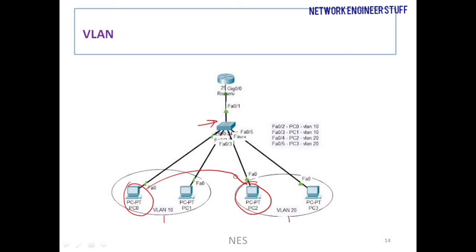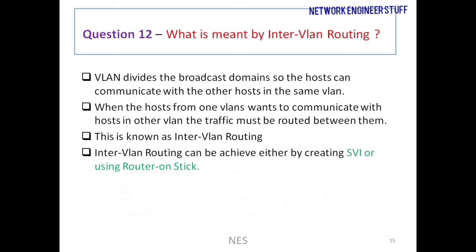The question can come: how can we make it possible that PC0 and PC2 communicate with each other? The answer leads to the next question — what is meant by inter-VLAN routing? When hosts are in different VLANs and they want to communicate, the traffic must be routed between them. This is known as inter-VLAN routing.